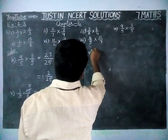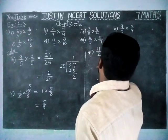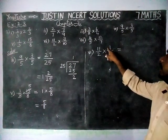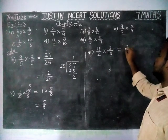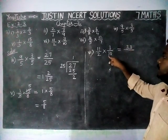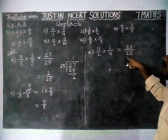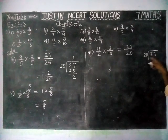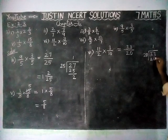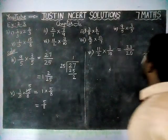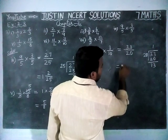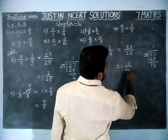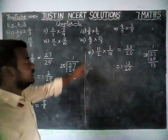Next, sixth question: 11/2 × 3/10. Here we cannot divide by any common divisor, so we are multiplying numerator into numerator: 11 × 3 = 33, divided by denominator into denominator: 2 × 10 = 20. This is an improper fraction, so we are dividing 33 by 20. In 33, we have only one 20, remaining is 13. So the quotient comes in the whole part, the remainder comes in the numerator, and the divisor comes in the denominator. So 1 13/20 is the answer for the sixth question.